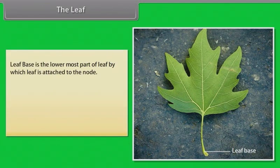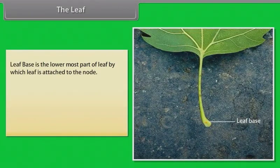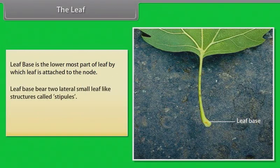Leaf base is the lowermost part of the leaf by which leaf is attached to the node. Leaf base bears two lateral, small leaf-like structures called stipules.